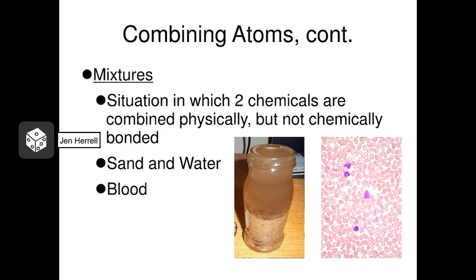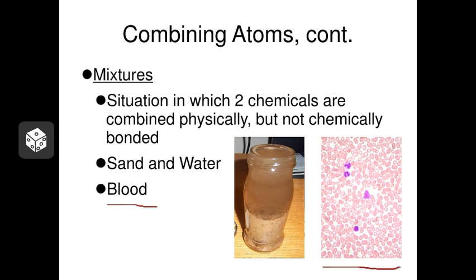Mixtures are combinations of chemicals that are physically combined but not chemically combined — they're not bound together. A good example is sand and water: if you throw sand into water, they are combined but not chemically bound forever, and you could separate them by filtering. Another example is blood, which consists of both solid parts — the cells — and liquid called plasma. You can separate these using physical means, such as centrifuging blood to pull out the cells.